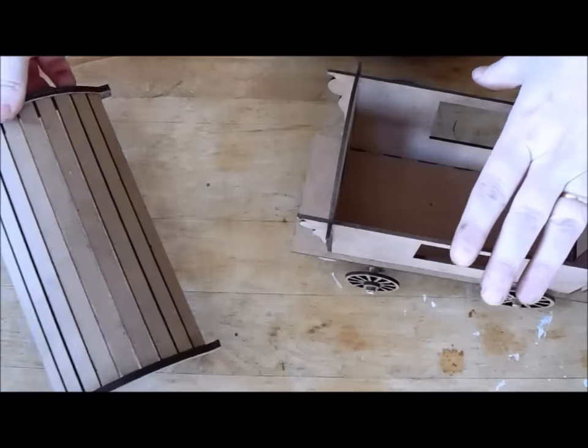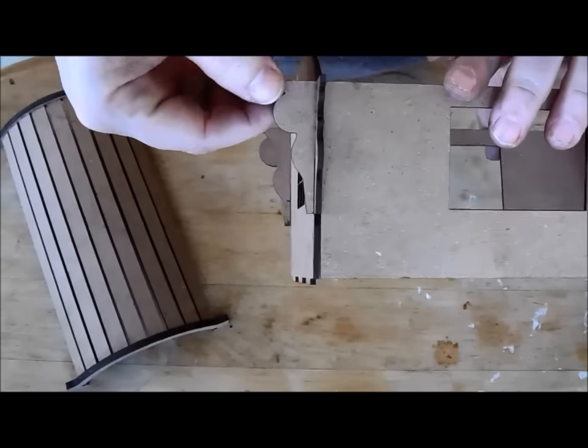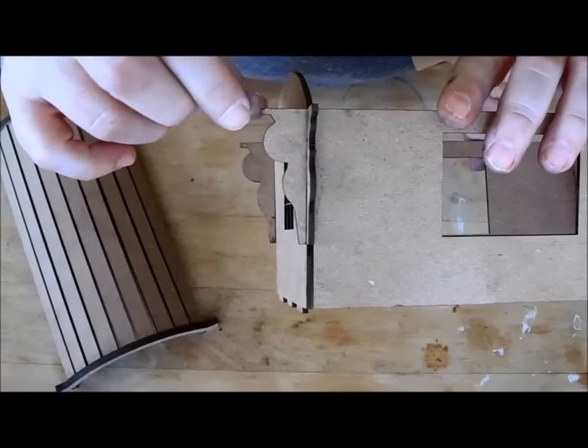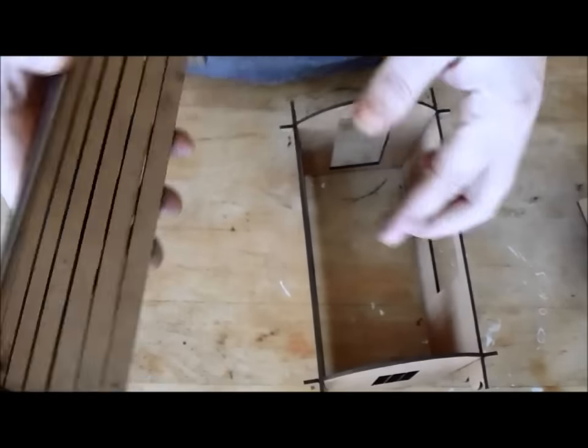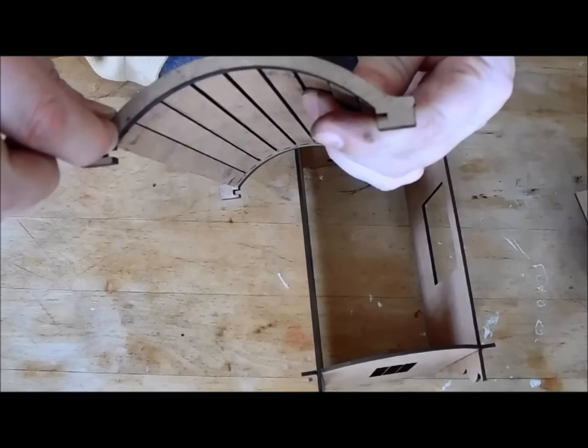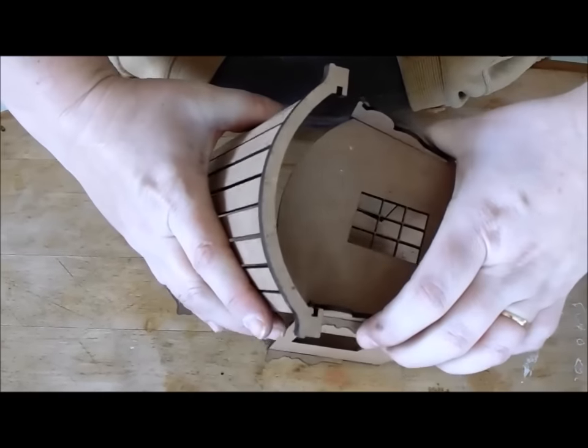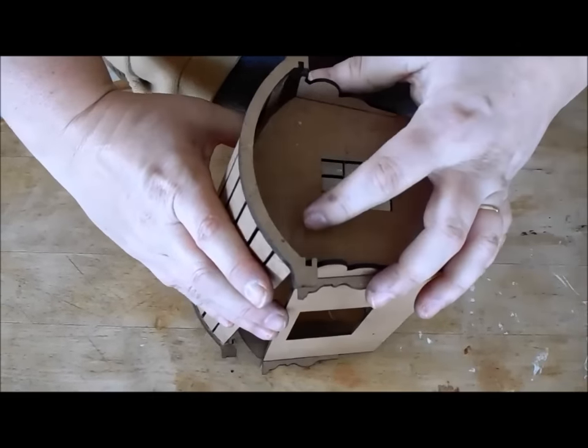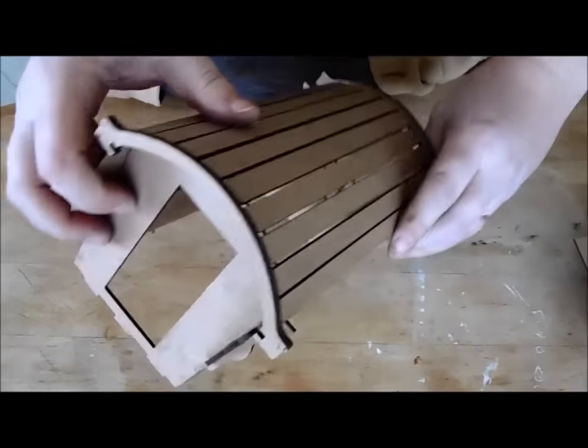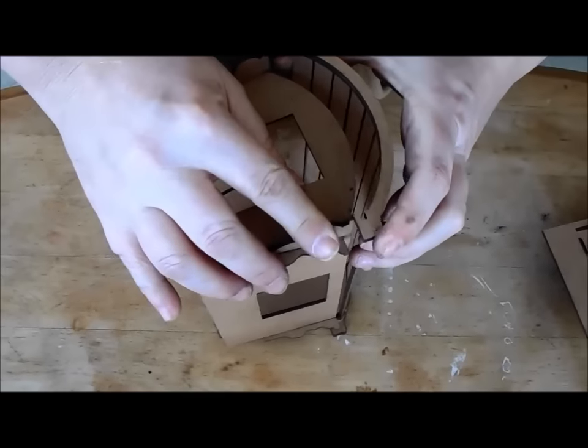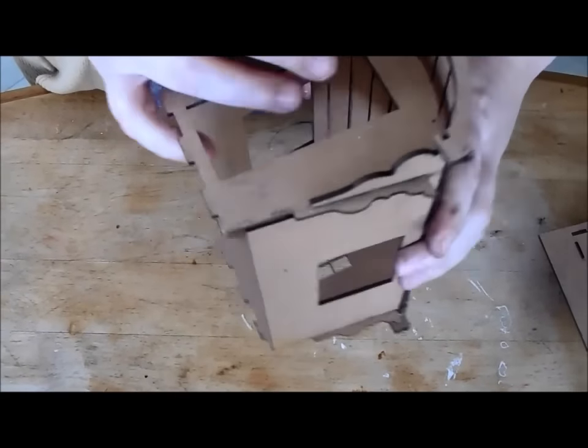For the curved roof, what you'll want to do is there are these sort of extended little bits on the top of the wagon body. There's small grooves right there in the curved roof. So those basically just slot right in together. It might take a tiny bit of fiddling, but you'll get them in. And again, on the other side. Again, you might just have to wiggle it in a bit. There you go.